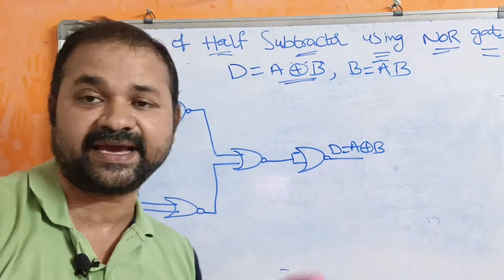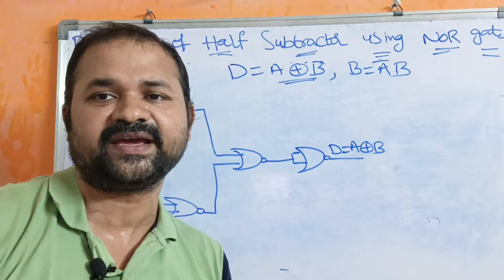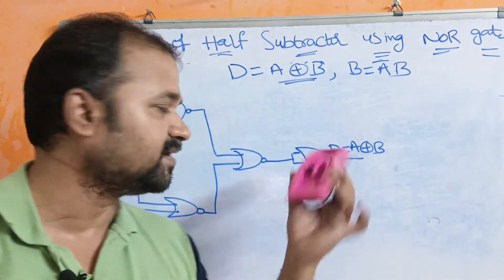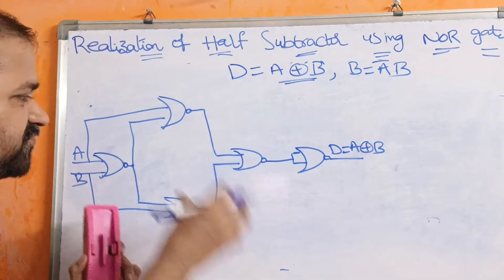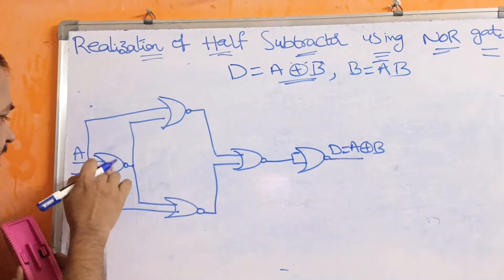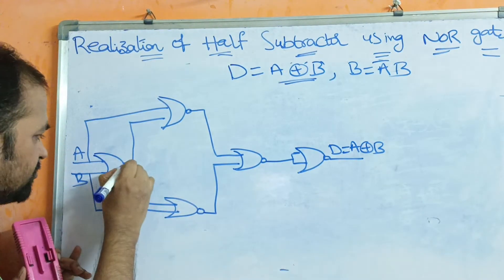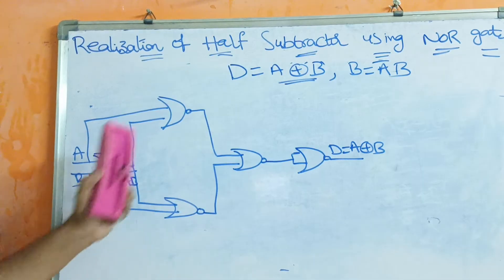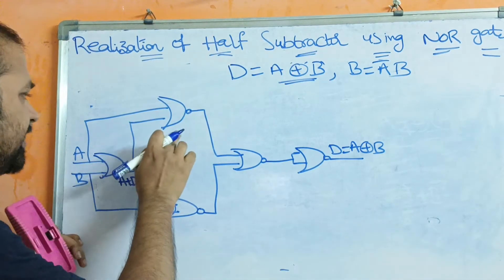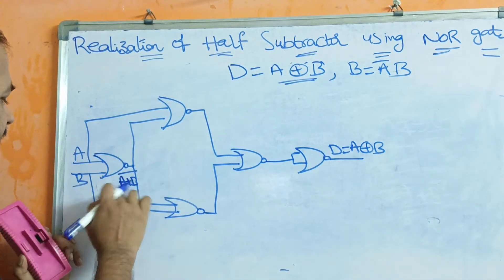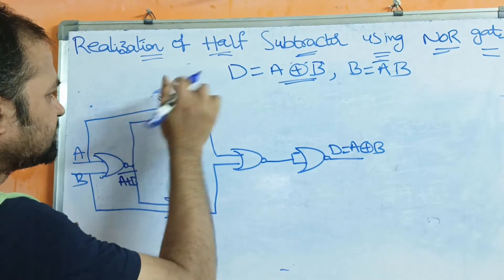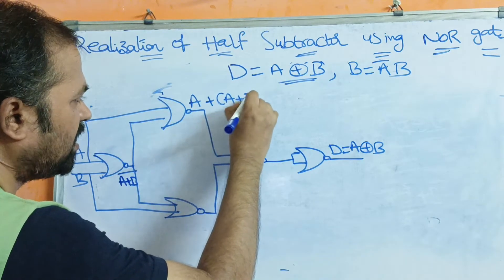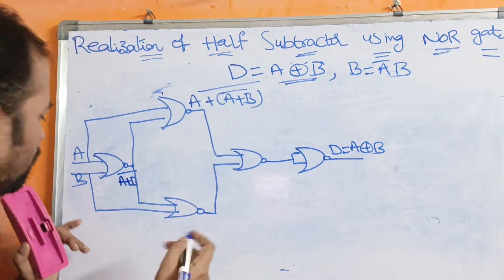A single-input NOR gate simply acts like a NOT gate. Now let us verify whether this is correct. The first NOR gate has inputs A and B, so it produces (A + B)-bar as its output. For the second NOR gate, the inputs are A and (A + B)-bar, so it produces (A + (A + B)-bar)-bar as its output.